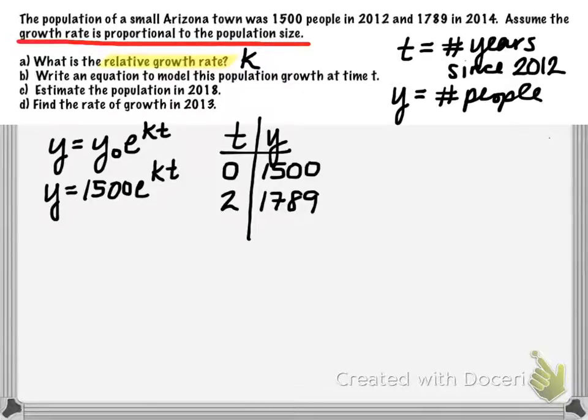Now we want to go ahead and use the second point to help us solve for k. So I'm treating these two values, 2 comma 1789, as an ordered pair basically.